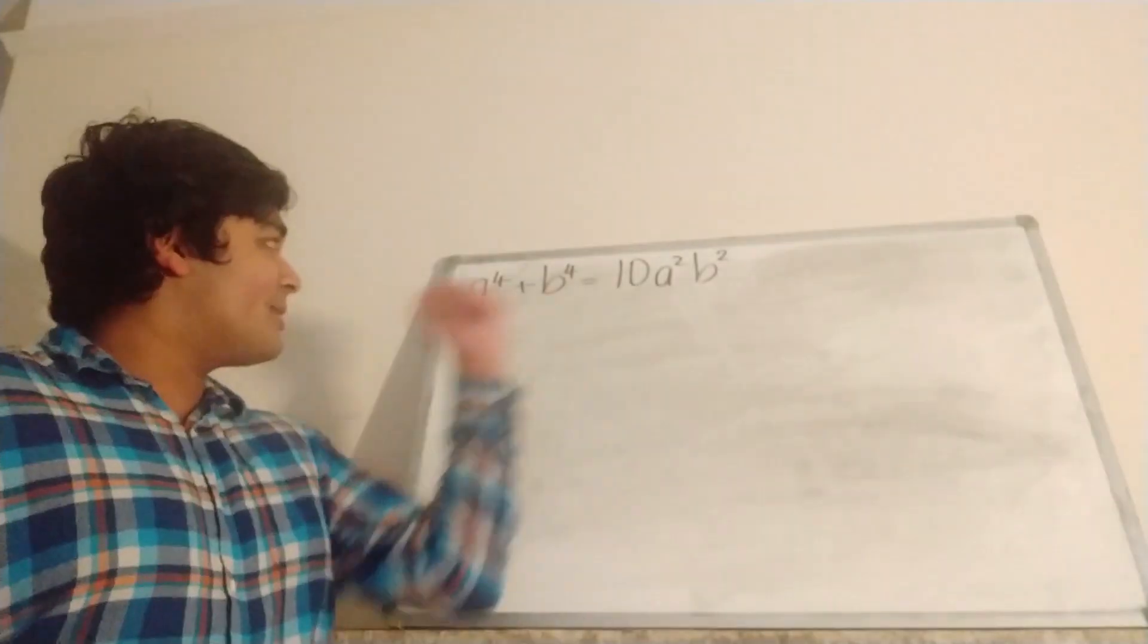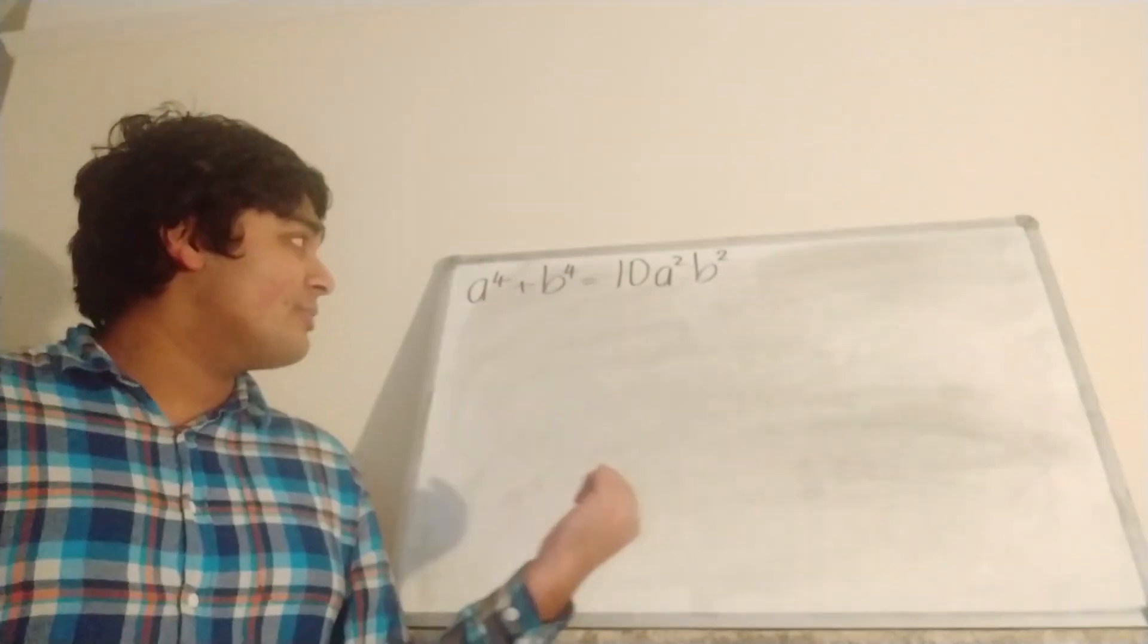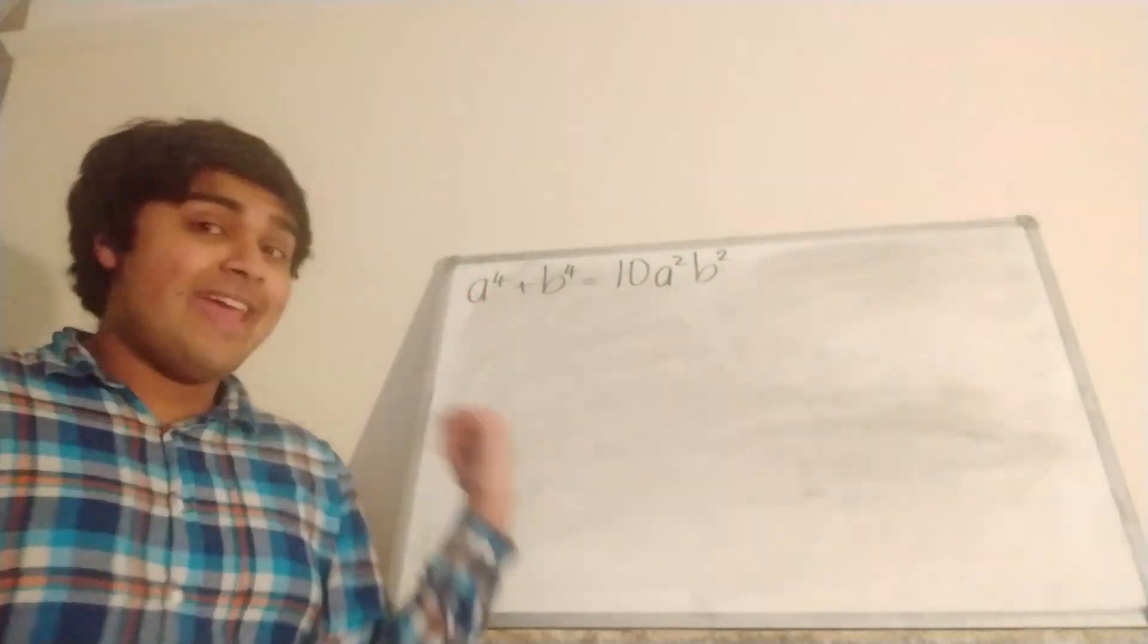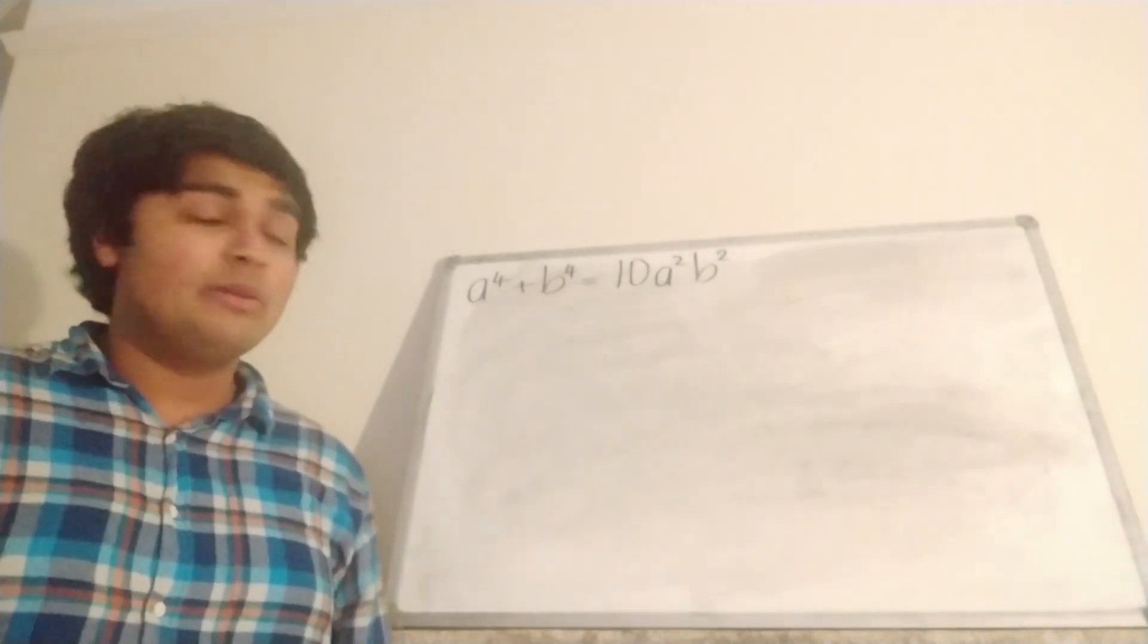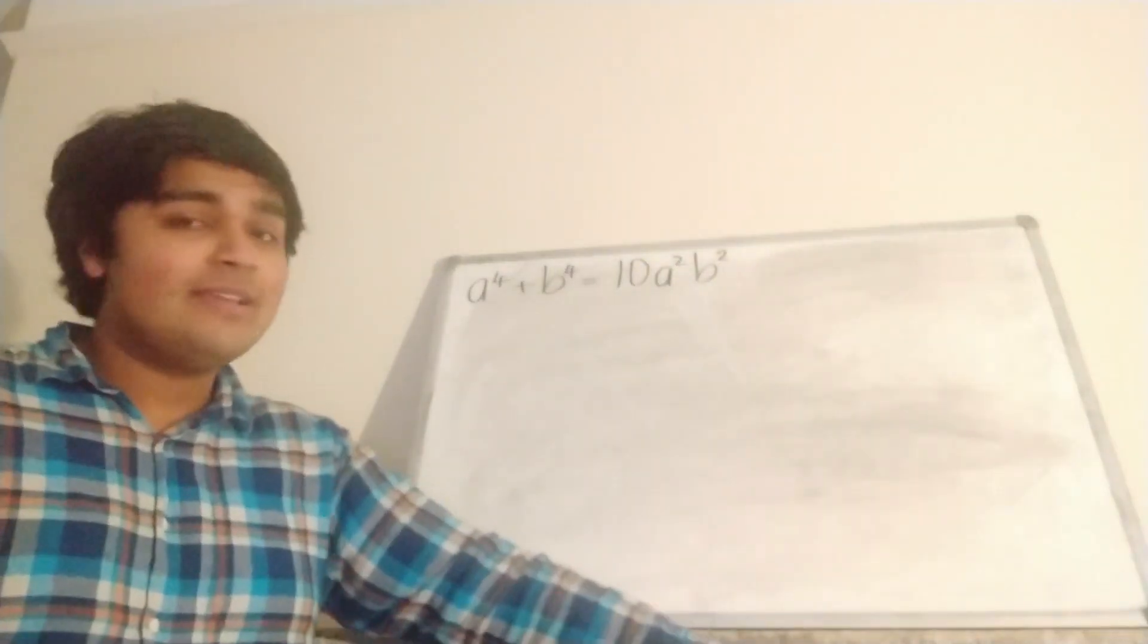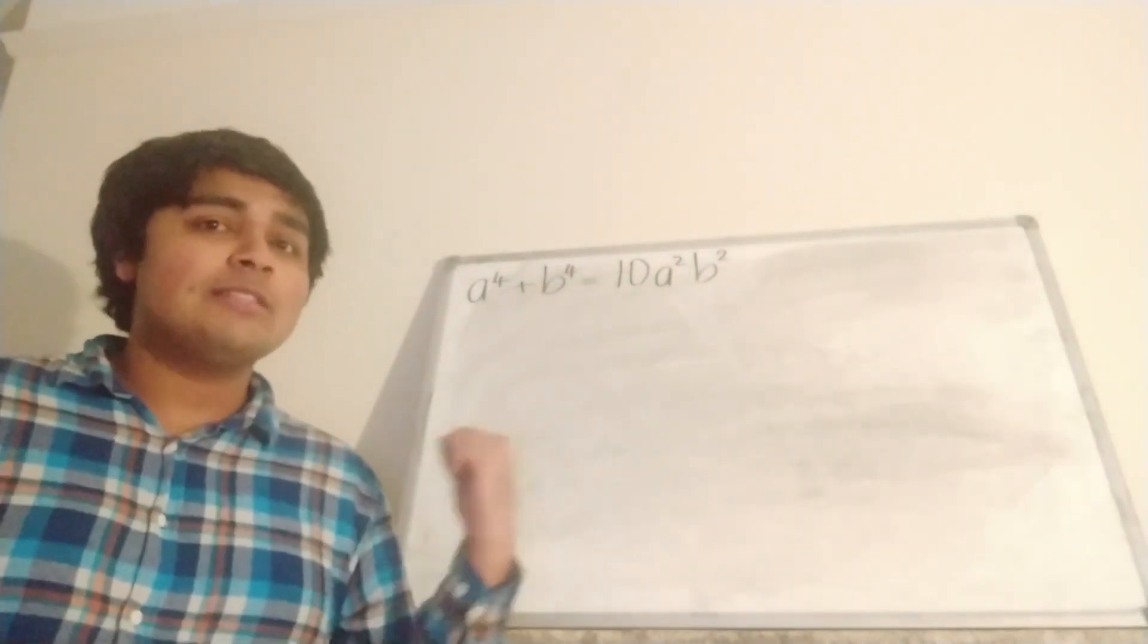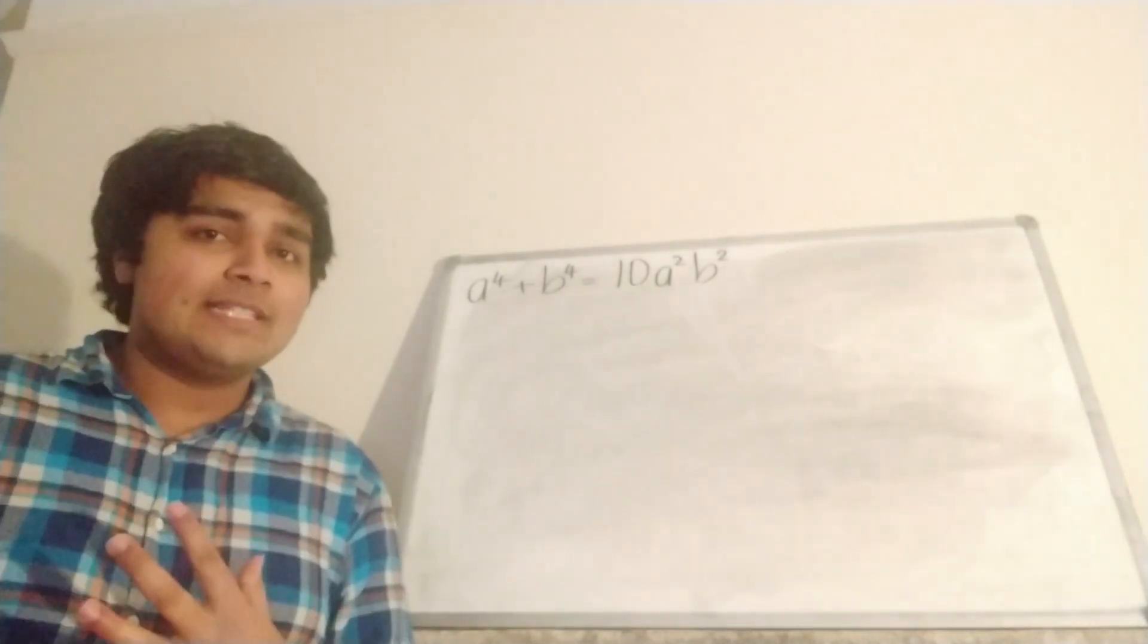So we have that A⁴ + B⁴ = 10A²B², but I claim that this is actually impossible. Now, why is that the case? Well, if we just firstly look at both sides, if A was a multiple of 3, then certainly A⁴ would be a multiple of 3. And on this side here we have an A², so this guy here would be a multiple of 3. So that means that B⁴ must be a multiple of 3, and that implies that B is a multiple of 3. So if A is a multiple of 3, then B is a multiple of 3.